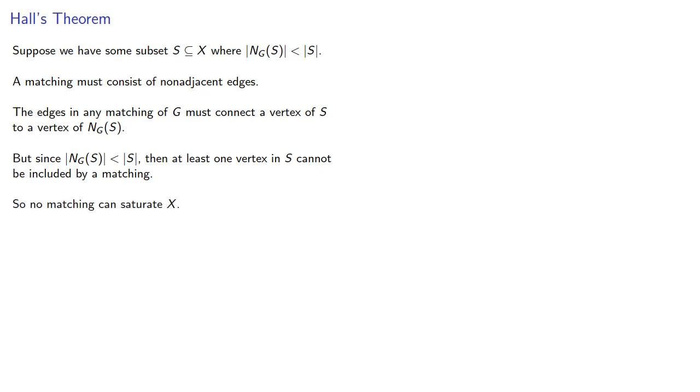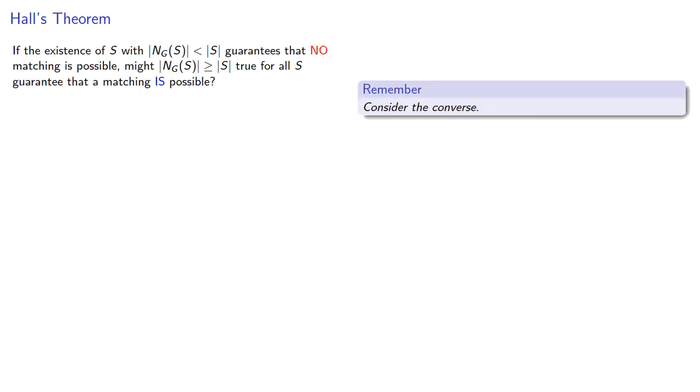Now, at this point it's worth remembering, consider the converse. If the existence of a subset whose neighborhood is smaller than the set guarantees that no matching is possible, might having the neighborhood be larger than the set true for all subsets guarantee that no matching is possible. Perhaps. Well, yes, but let's not spoil the suspense. We'll take a look at that next.